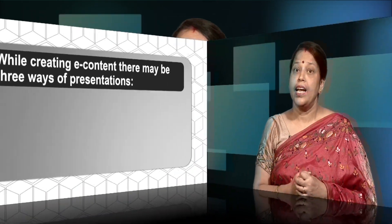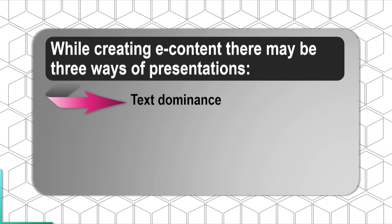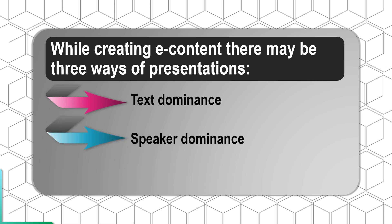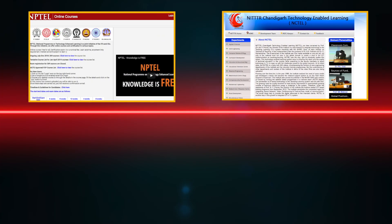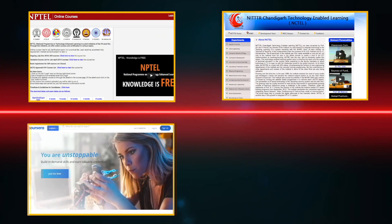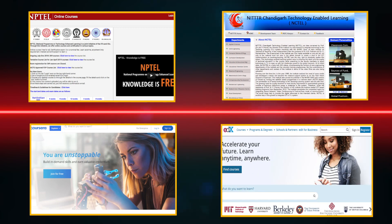While creating e-content, there may be three ways of presentation: first, text dominance; second, speaker dominance; and the third is animation dominance. If you want to see examples of e-content, you can visit NPTEL, NCTL, Coursera, edX platform, and many others.